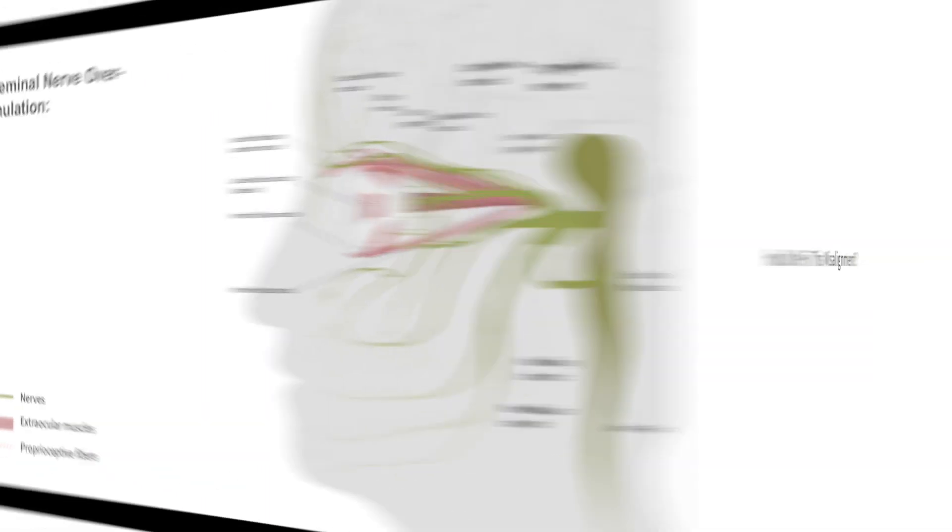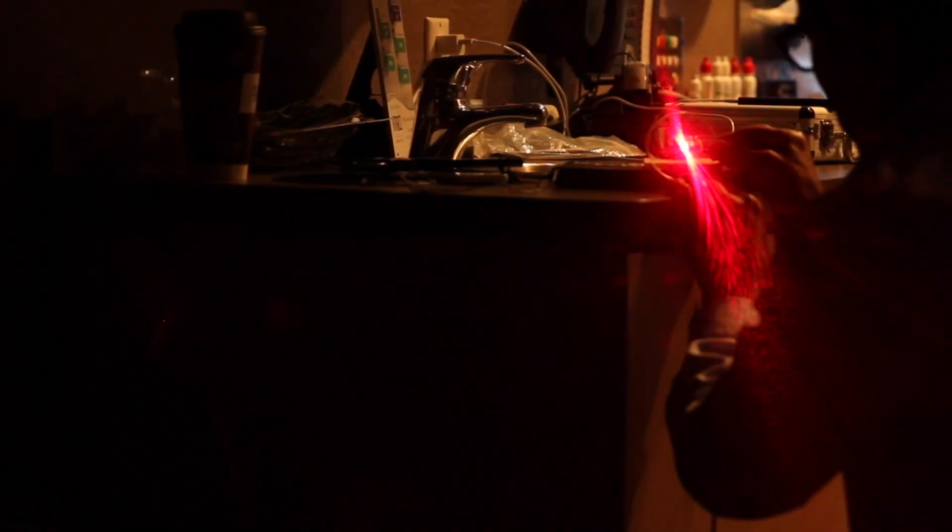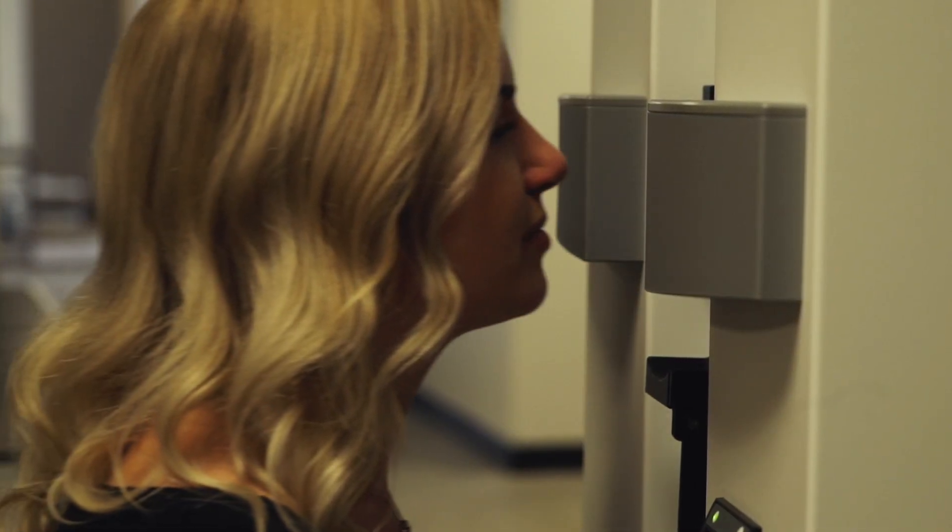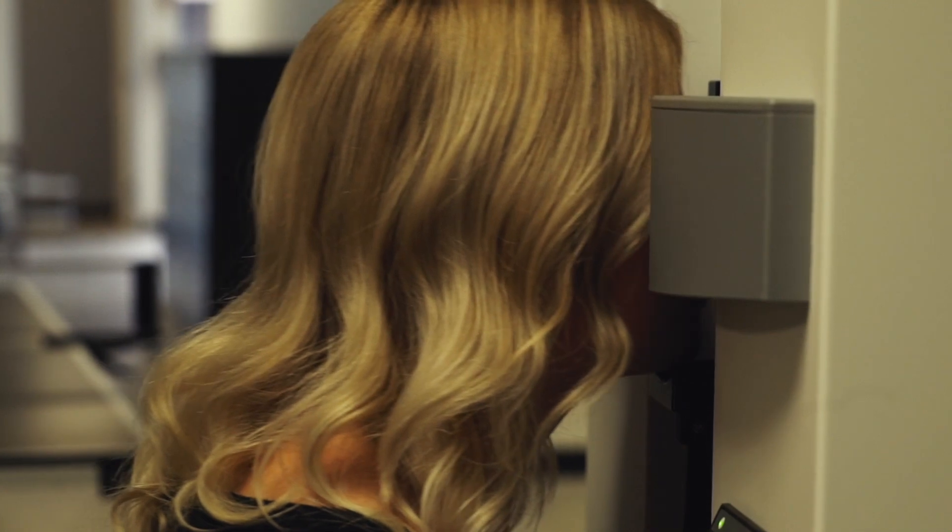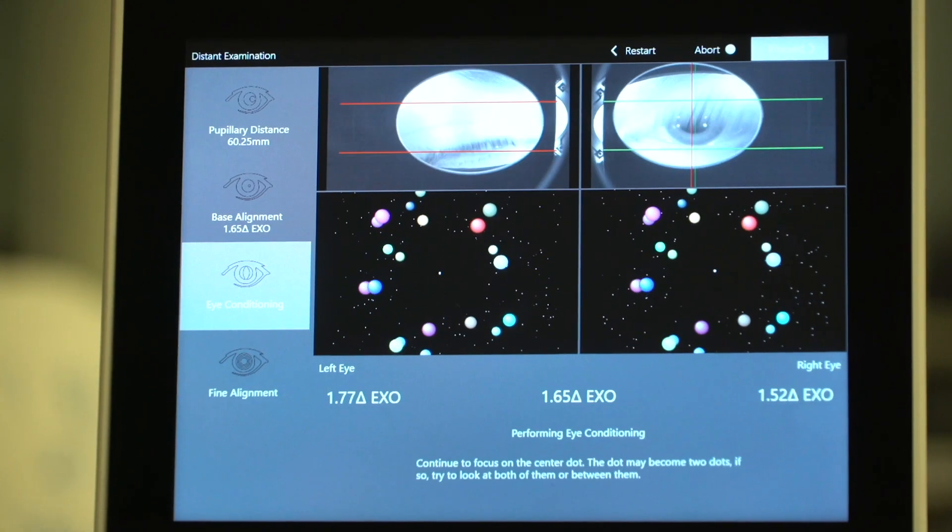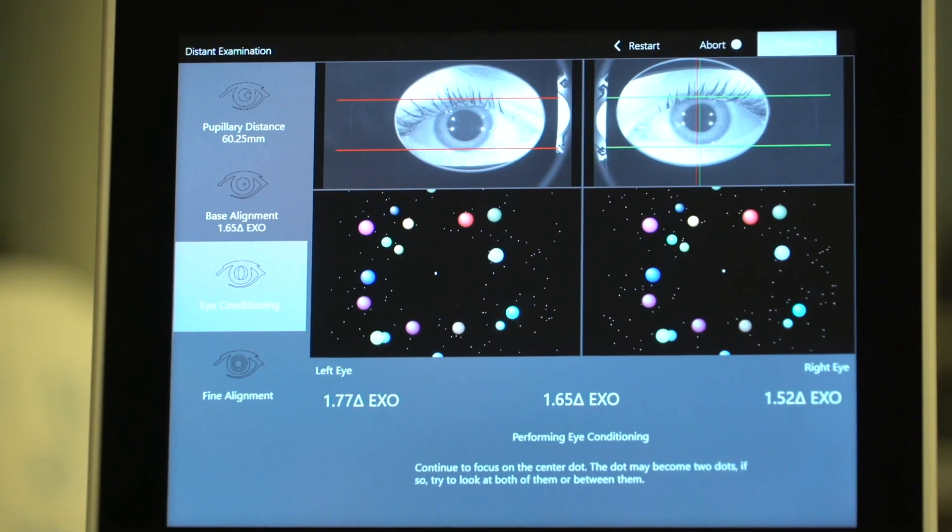So how do we relieve these symptoms? Your eye care provider can identify if you are experiencing a misalignment with a simple sight sync test. The sight sync is the only objective visual testing system designed to accurately measure and prescribe for eye misalignment.